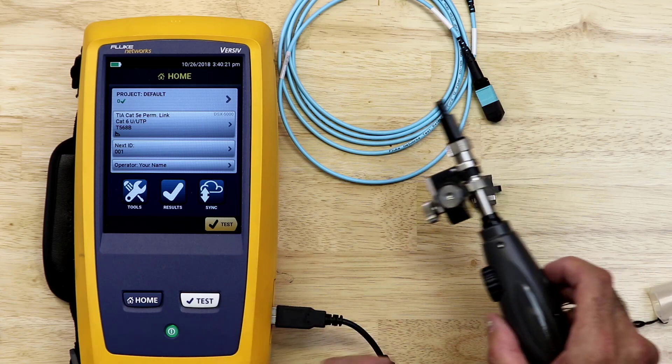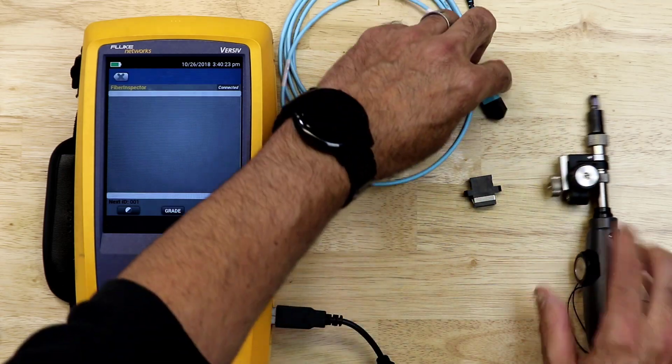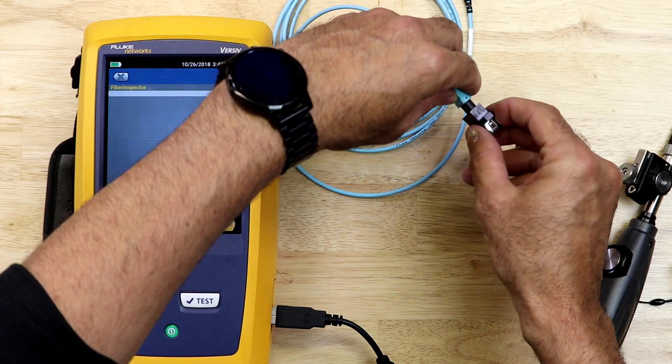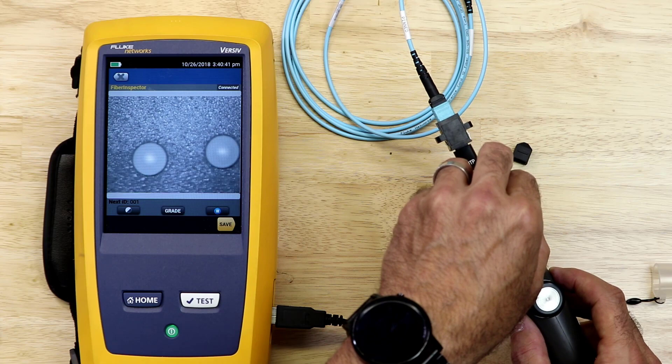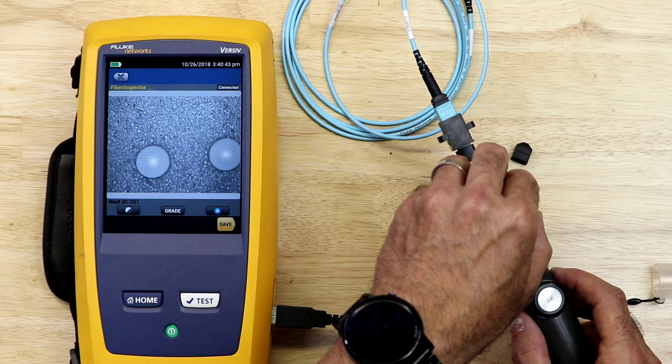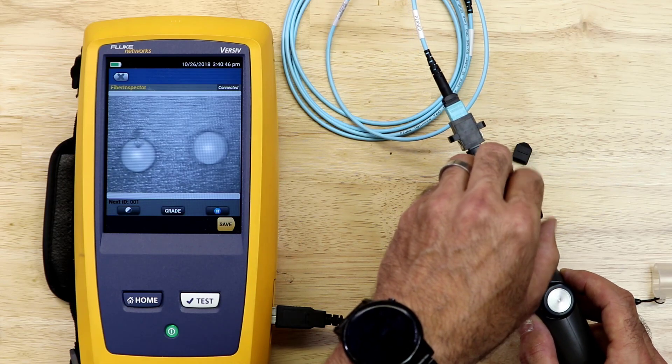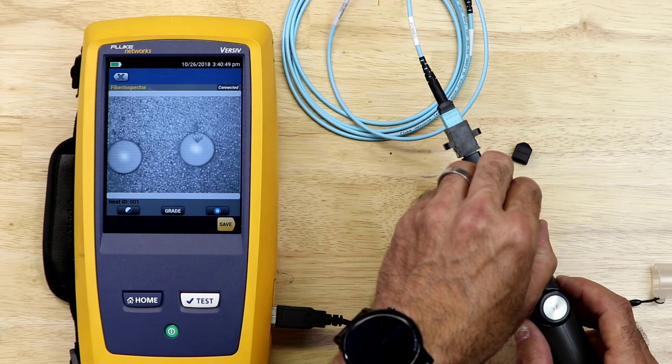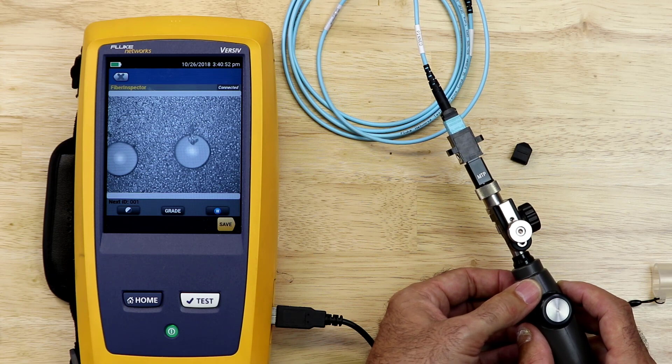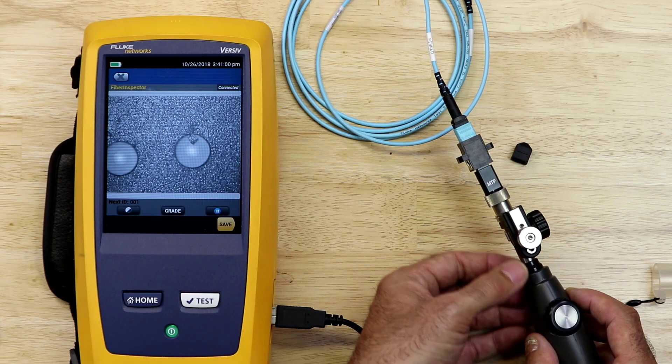On the Versa mainframe, I will select the fiber inspection tool. Next, I will connect a bulkhead adapter to the MPO connector I'm going to test. I've found it's much easier to connect the bulkhead adapter first and then connect it to the camera. Here we can see the end face of the MPO connector on the screen of the Versa mainframe. By rotating the knobs on the MPO inspection adapter, I can center the end faces in the screen and move across the end of the connector. It is important that we inspect all 12 of the end faces before connecting the fiber to our test equipment or other fibers. Here I can see that I've got an end face with some dirt on it.